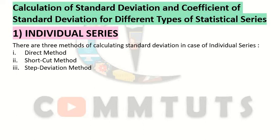We calculate standard deviation in three types of series: individual series, discrete series, and continuous or frequency distribution series. We will learn how to calculate each one. In all other measures of dispersion — range, quartile deviation, and mean deviation — there was one method per series. But in standard deviation, you will see two or three methods for every series.